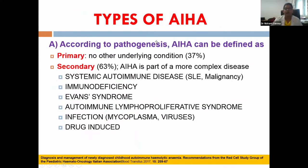AIHA can be classified either by pathogenesis or by antibody type. By pathogenesis: primary, where there is no underlying condition (seen in about 37 percent of cases), and secondary, when it is part of a more complex disease (seen in about 63 percent of cases).